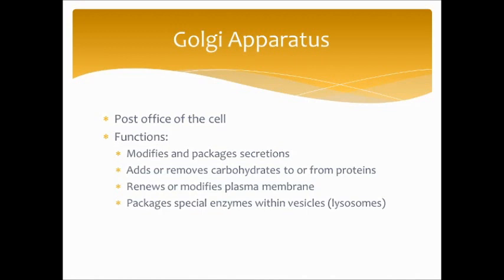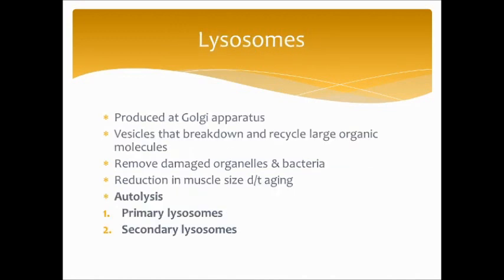The Golgi apparatus is usually called the post office of the cell. It is responsible for modifying and packaging things made throughout the cell by different organelles. It can add or remove carbs to or from proteins, renews or modifies the plasma membrane, and packages special enzymes within vesicles. Because it's responsible for packaging and tagging proteins and secretions, that's why it's generally called the post office of the cell.